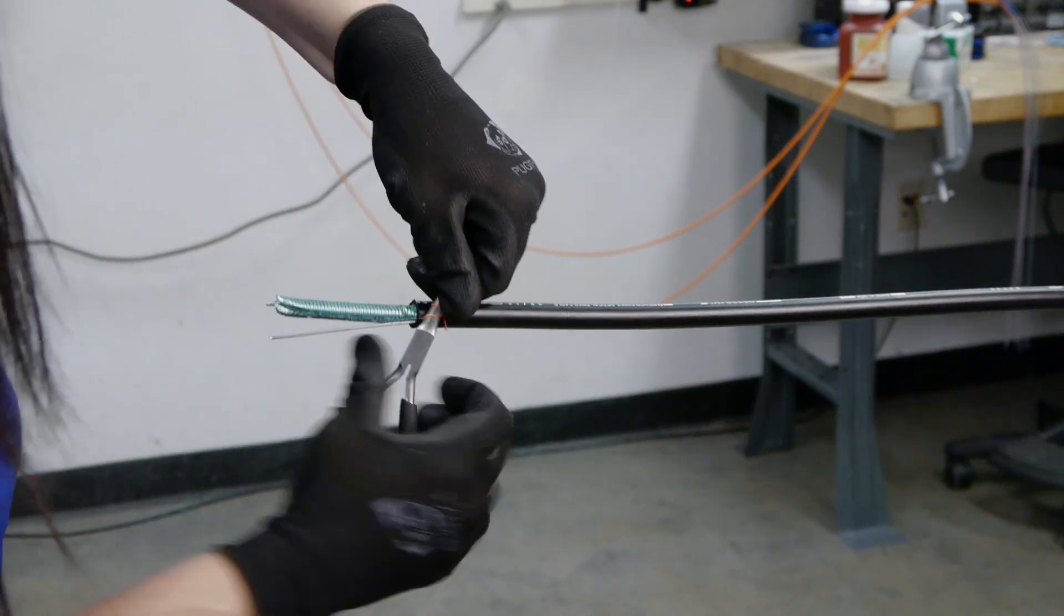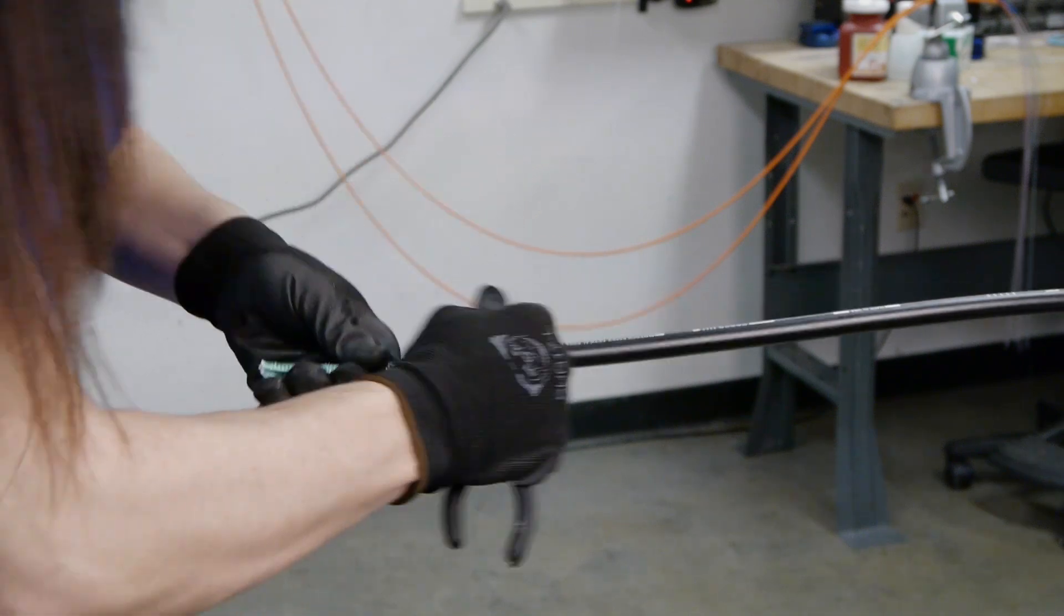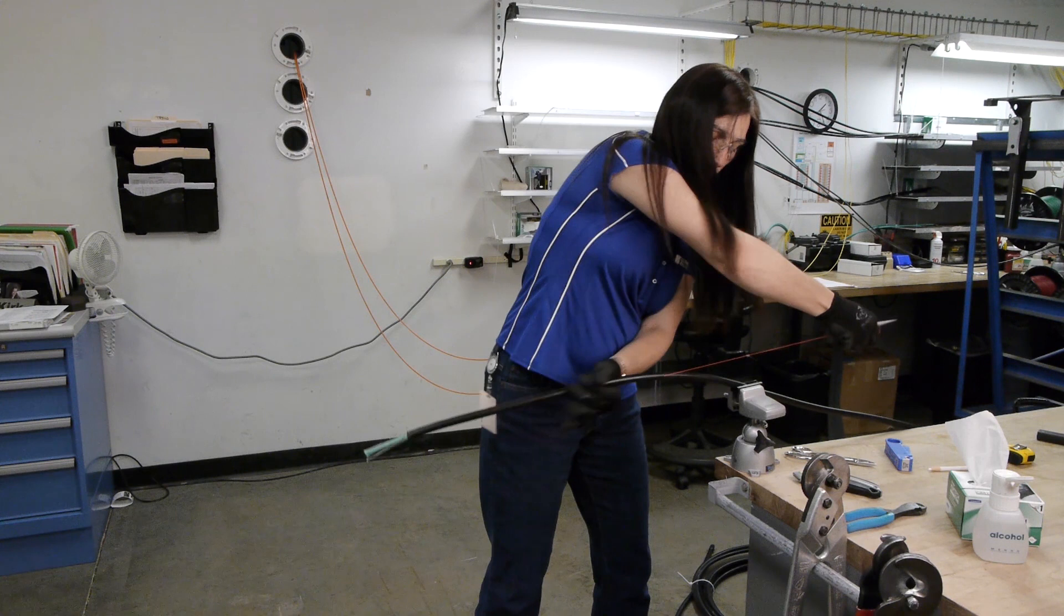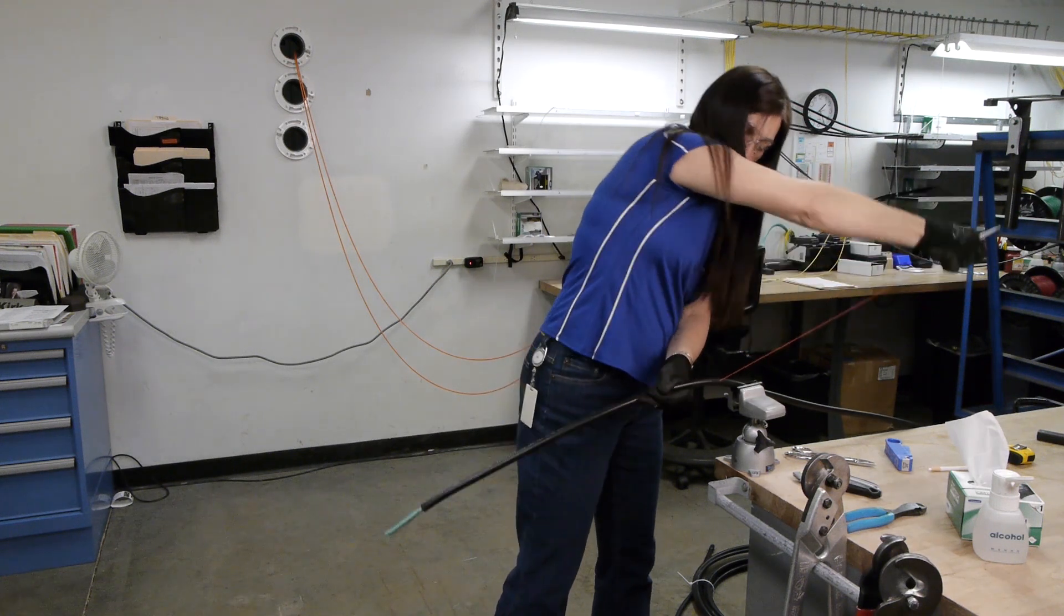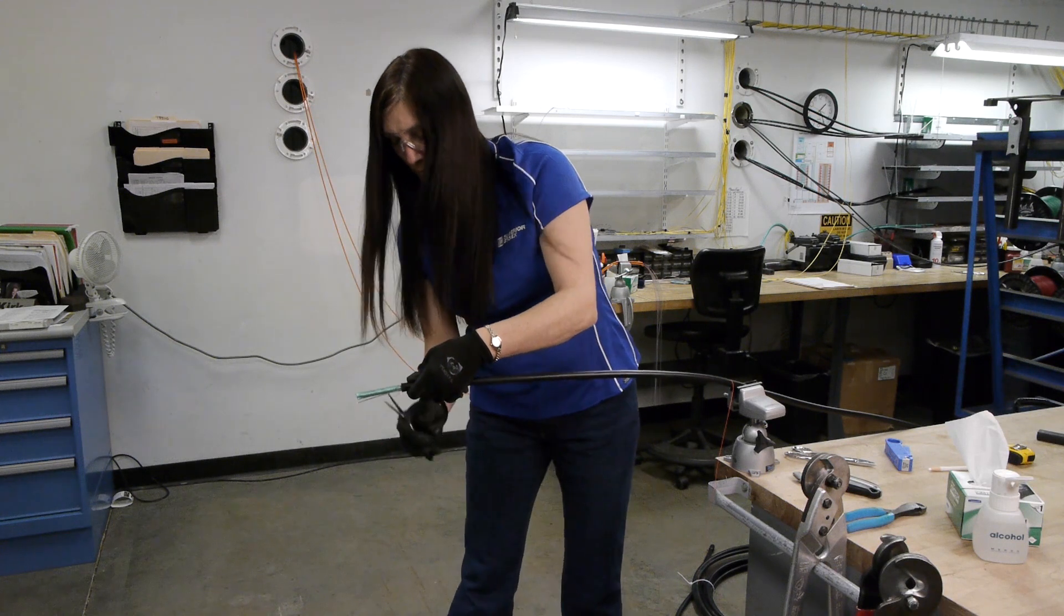Wrap the rip cords with needle nose pliers and pull rip cord to opposite ring cut. Repeat procedure for both rip cords.